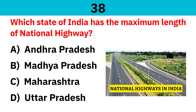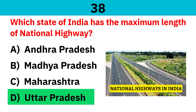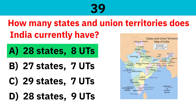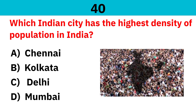Which state of India has the maximum length of national highway? Correct answer is Uttar Pradesh. How many states and union territories does India currently have? Correct answer is 28 states and 8 union territories. Which Indian city has the highest density of population? Correct answer is Mumbai.